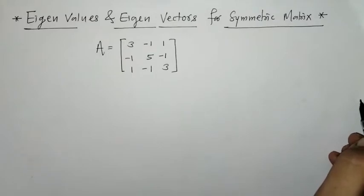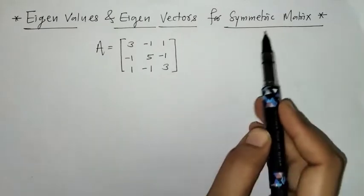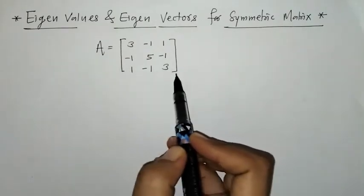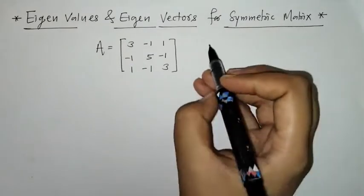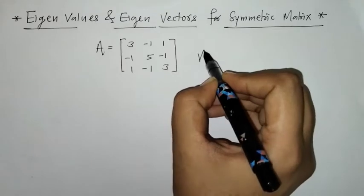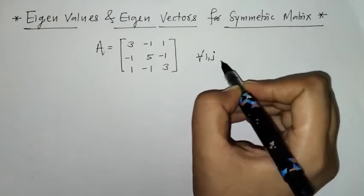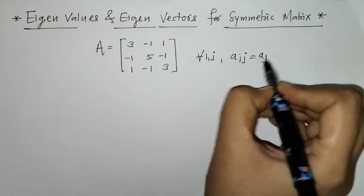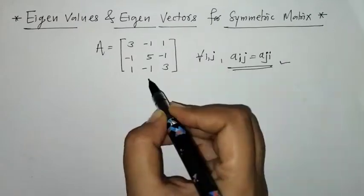Hello everyone, welcome to Unlock Maths. Today we have to find eigenvalues and eigenvectors for a symmetric matrix. Here we have taken matrix A. This matrix A is symmetric since we can check that for all i and j, A_ij equals A_ji. So yes, this matrix is a symmetric matrix.